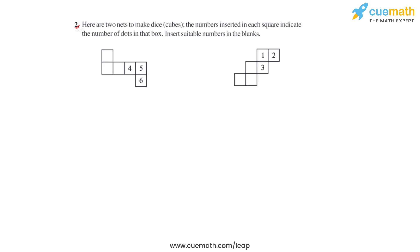Question number two of this first exercise gives us two nets, and it's also given that they form dice or cubes. The numbers inserted in each square indicate the number of dots in that box, and a few of the boxes are empty — we'll have to insert suitable numbers in those empty boxes.